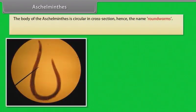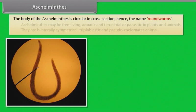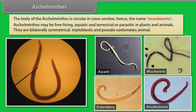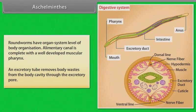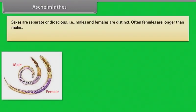The body of Aschelminthes is circular in cross-section, hence the name roundworms. Aschelminthes may be free-living, aquatic and terrestrial, or parasitic in plants and animals. They are bilaterally symmetrical, triploblastic and pseudocoelomate animals. Roundworms have organ system level of body organization. The alimentary canal is complete with a well-developed muscular pharynx. An excretory tube removes body waste from the body cavity through the excretory pore. Sexes are separate, that is dioecious — males and females are distinct. Often females are longer than males.